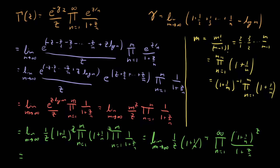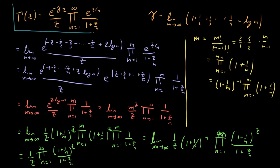So what we're left with is 1 over z times the product from n equals 1 to infinity of 1 plus 1 over n to the z divided by 1 plus z over n, which is exactly the Euler product definition of the gamma function. We've proven that the Weierstrass product definition is exactly the same as the Euler product definition. And since those two are the same, and the Euler product is the same as the integral definition, all three definitions of the gamma function are equivalent — we can use them and interchange them indiscriminately.